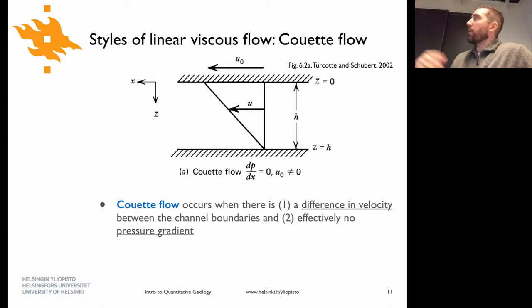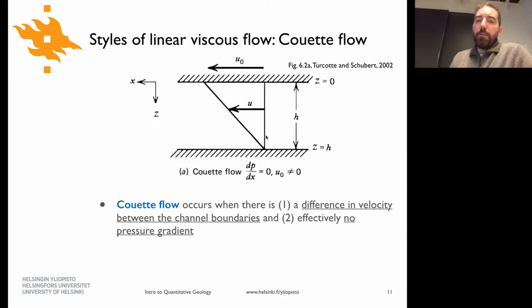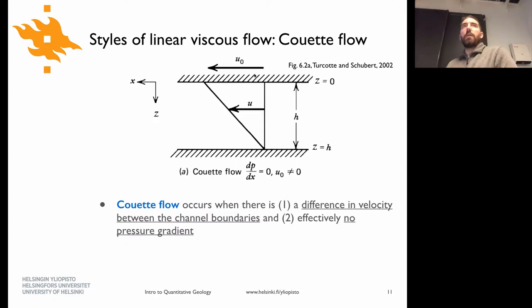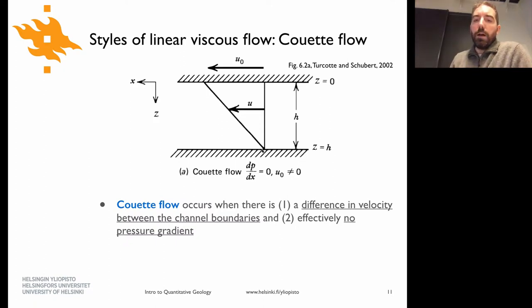There are two different end-member types of flow of a fluid within a channel. One is called Couette flow, where there is no pressure difference across the fluid, but you just move one of the sides of it. When you move one side, it causes the fluid to deform along with it, and you get a velocity that goes from zero at the bottom up to the velocity at which you're moving the top side.